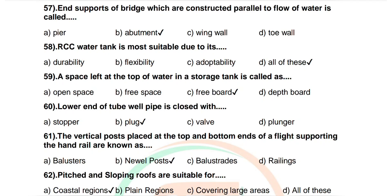Question number 61: The vertical posts placed at the top and bottom ends of a flight supporting the handrail are known as. Options are balusters, newel posts, balustrades, railings. Correct answer: newel posts.